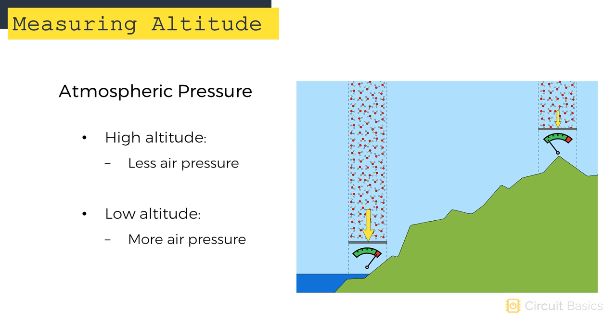This relationship between altitude and atmospheric pressure is what allows us to measure altitude with the BMP180. The BMP180 can detect very small changes in atmospheric pressure. It's so sensitive, in fact, that we can use it to measure altitude with an accuracy of just a few inches.